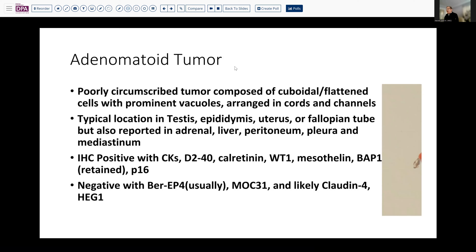Adenomatoid tumor is a poorly circumscribed tumor with cuboidal and flattened cells, prominent vacuoles, small cords, and occasional channels — most likely seen in the GU tract or the GYN tract. But if you look in large series, you'll also find cases reported in the adrenal, in the liver, in a disseminated fat pattern, in the peritoneum, even in the pleura and mediastinum. These are lesions that are positive with cytokeratins, with D2-40 or mesothelin, calretinin, WT1, and BAP1 is retained.